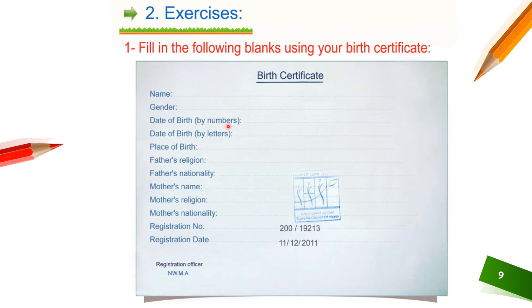Date of birth — you need to write it by numbers, for example 14-2-2000, and also write the date of birth by letters, like 14 August 2000. Next is place of birth — where were you born, for example Qatar. Next is father's religion, father's nationality, mother's name, mother's religion, mother's nationality. The registration number and registration date are already given.